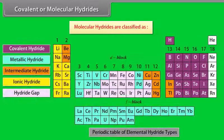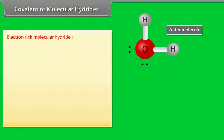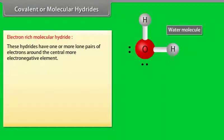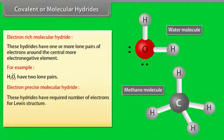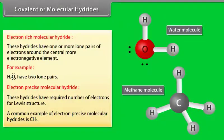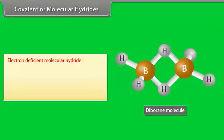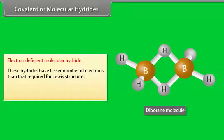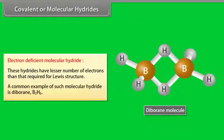Covalent or molecular hydrides are classified as: Electron-rich molecular hydride. These hydrides have one or more lone pairs of electrons around the central more electronegative element. For example, water has two lone pairs. Electron-precise molecular hydride. These hydrides have required number of electrons for Lewis structure. A common example of electron-precise molecular hydride is methane. Electron-deficient molecular hydride. These hydrides have lesser number of electrons than that required for Lewis structure. A common example of such molecular hydride is diborane.